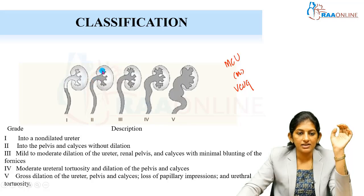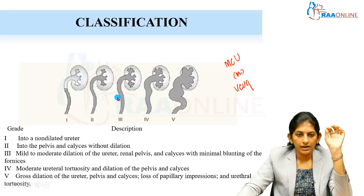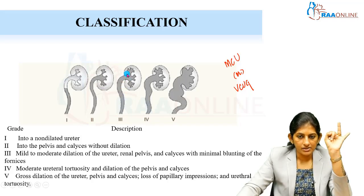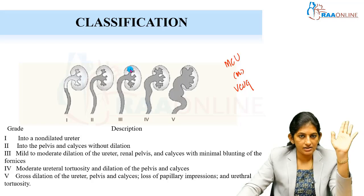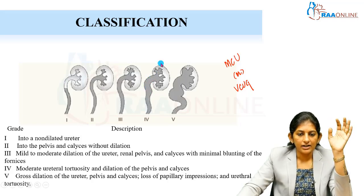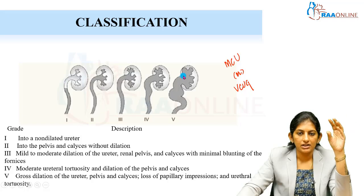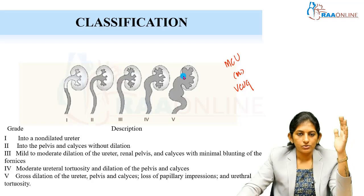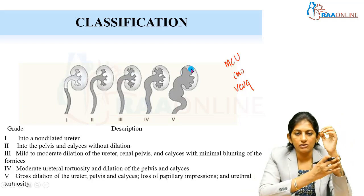Grade 3 shows mild dilatation of the ureter, mild dilatation of the pelvis, and dilated calyces, but blunting of the calyces has not yet occurred. Grade 4 shows moderate to tortuous ureteric dilatation, dilated pelvis and calyces, and blunting is seen. Grade 5 shows gross dilatation of the ureter, pelvis, and calyces — the calyces are completely blunted and corticomedullary differentiation cannot be identified.